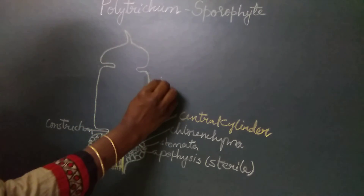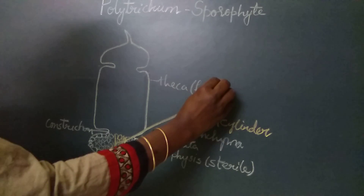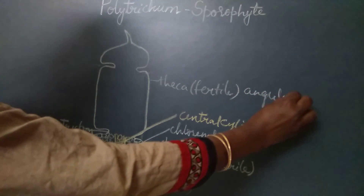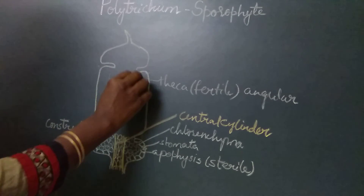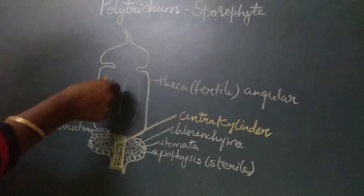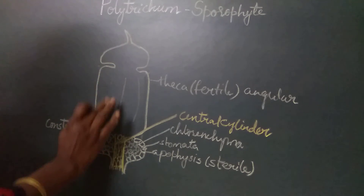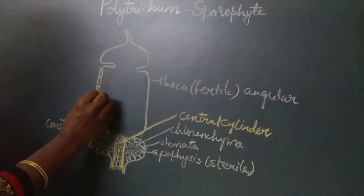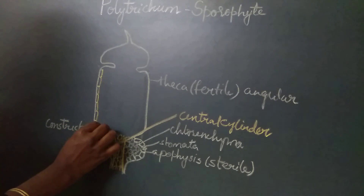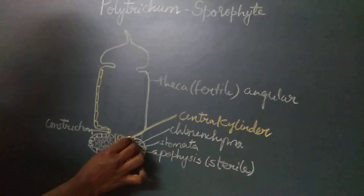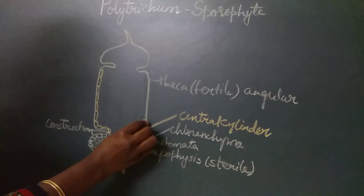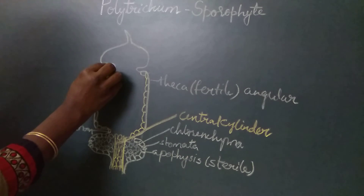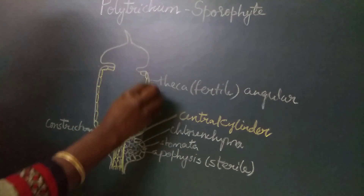The theca is the fertile region of the capsule. It is angular because of the presence of longitudinal grooves visible externally on its surface. The theca has a number of wall layers. The outermost wall layer is the epidermis, which is in continuation with the epidermis of the apophysis, and the cells of the epidermis have thick walls.